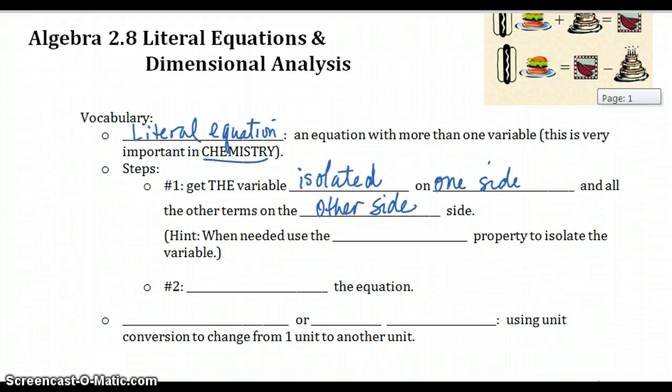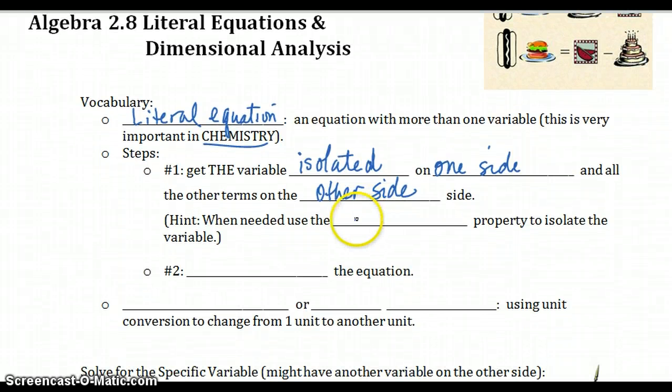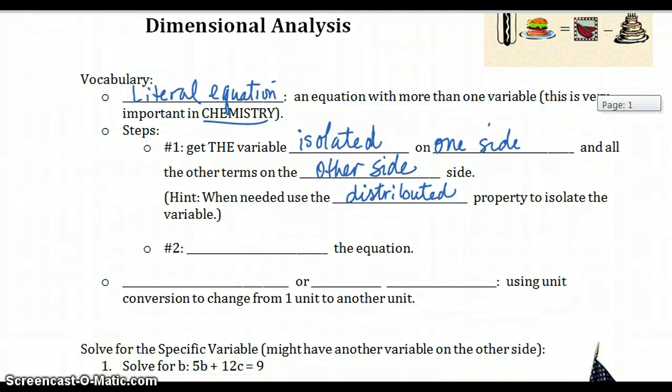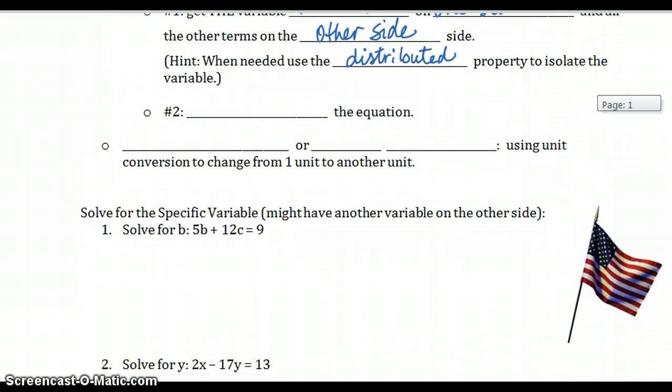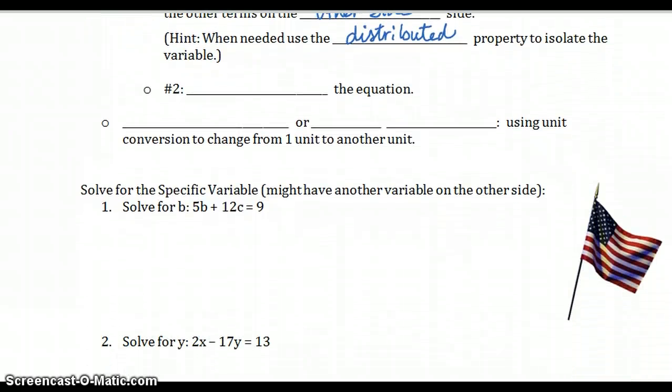Here are the steps to solving a literal equation. You need to get the variable isolated on one side, and all other terms and variables you need to put those on the other side. So we're still solving equations just like we've been doing, but we're going to have more than one variable in our equation. When needed, use the distributive property. Sometimes we have to undo the distributive property and use parentheses. Then we're ready to solve. Once you've isolated the variable, you're ready to solve the equation.